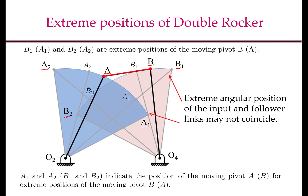As you can see from the figure, when the moving pivot B is at B1, the moving pivot A is at A1-bar, which is this point here. So the extreme angular positions of the input link and the follower link may not coincide. When the follower link is O4B1, my input link is at O2A1-bar; when the follower link is at O4B2, my input link is at O2A2-bar. Whereas the extreme positions of the input link are O2A1 and O2A2 — when the input link is at its extreme positions, the output link does not need to be at its extreme positions.